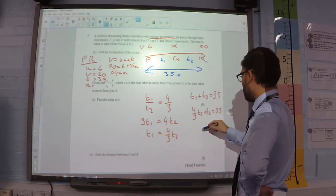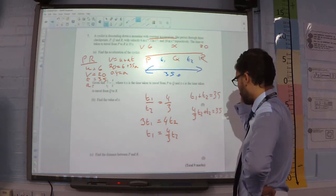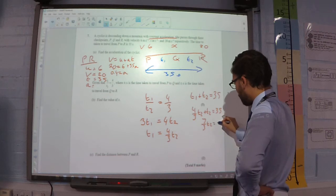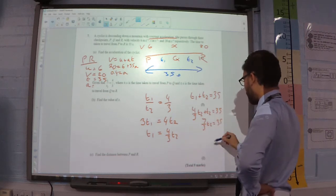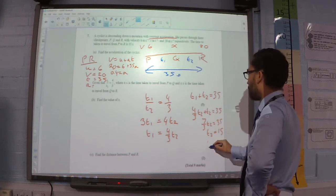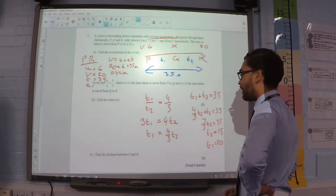So, 7 over 3 T2 is equal to 35. So, T2 is going to be 15. And, that means that T1 is 20.